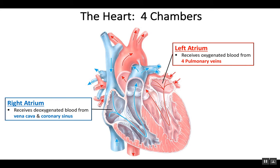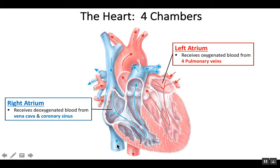The atria are positioned superiorly compared to the ventricles, so they're located above them. The right atrium receives blood from throughout the body. This blood has already delivered oxygen to cells, so it is deoxygenated. There's a large blood vessel bringing blood down from the head and neck regions called the superior vena cava. Blood coming up from organs and tissues below the heart arrives via the inferior vena cava. A third vessel called the coronary sinus brings coronary blood back into the heart.